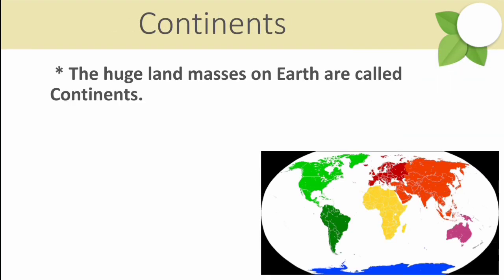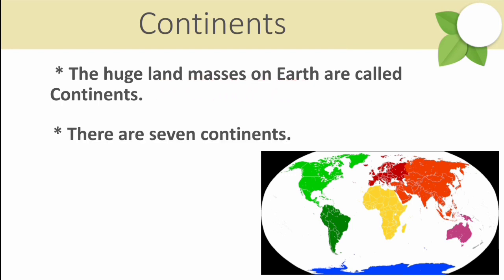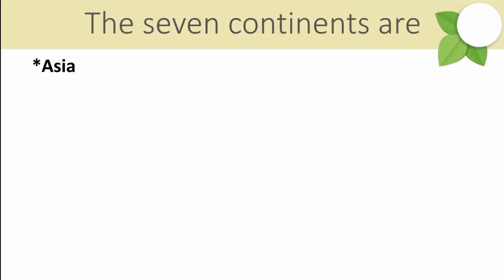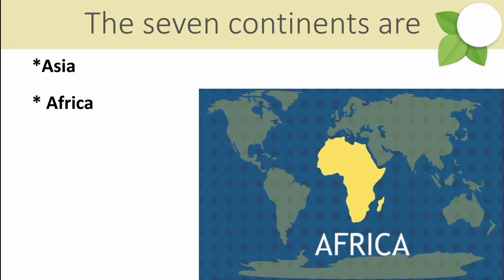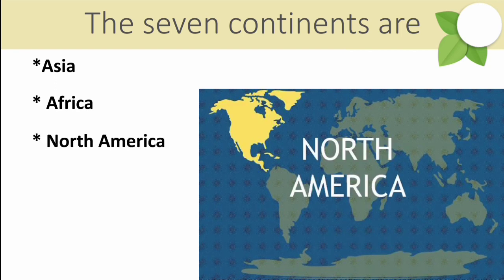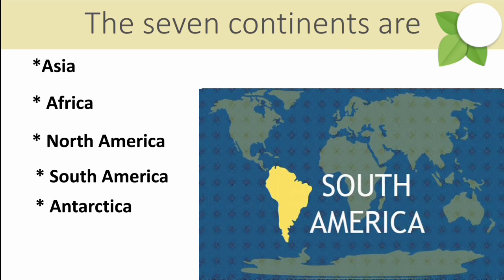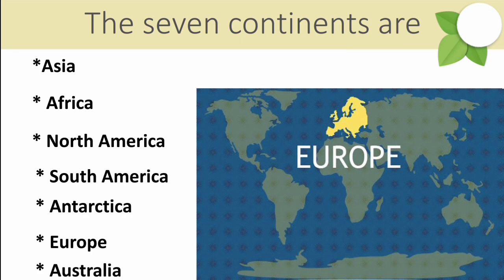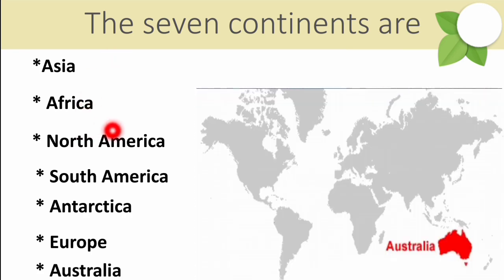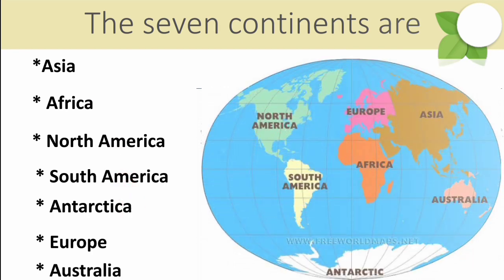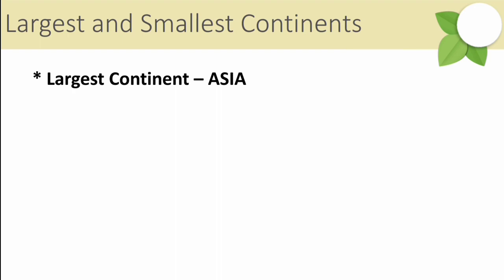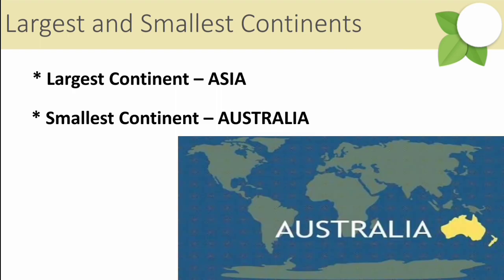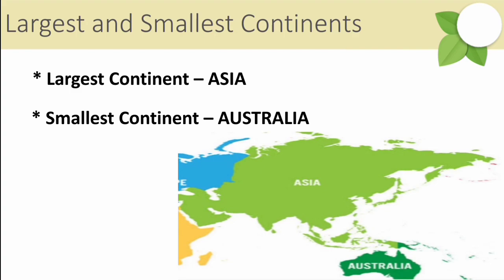Continents are huge landmasses on the earth and there are seven continents: Asia, Africa, North America, South America, Antarctica, Europe and Australia. The largest continent is Asia and the smallest is Australia.